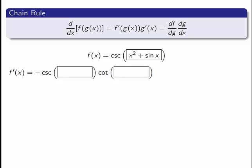But the thing in the box is not actually my variable. It's x squared plus sine x. So now what I have to do is I have to multiply this by the derivative of the thing in the box. The derivative of x squared is 2x and the derivative of sine x is cosine x.